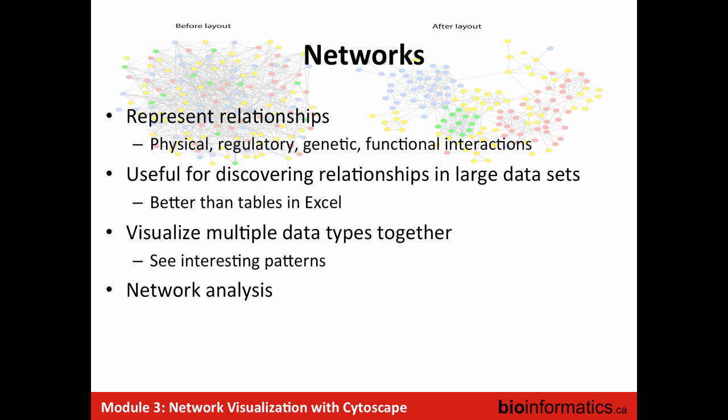You can have functional interactions, which basically means that two genes are functionally related based on the interaction. There are lots of different types of interactions useful for relating the function of gene A to gene B, like sequence similarity. If one gene has very similar sequence to another, it's likely of similar function. If they're both co-expressed across many conditions, they probably have similar function. If they have similar protein domains, they have similar function.